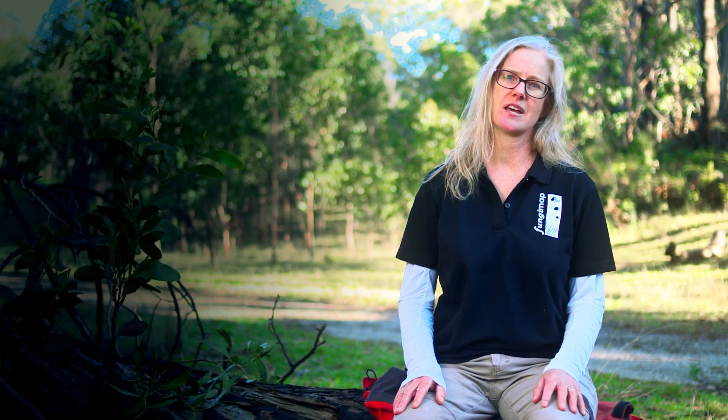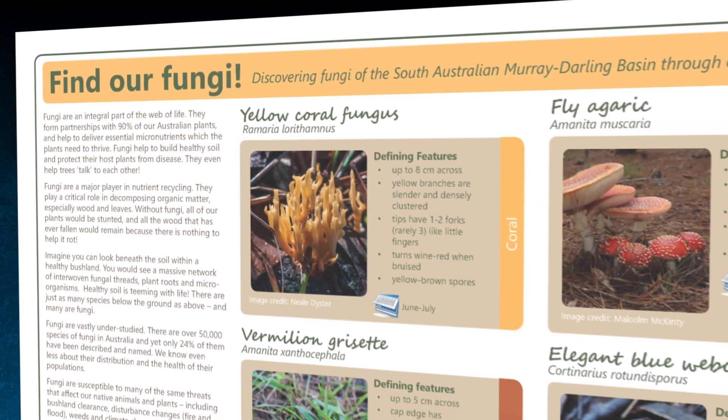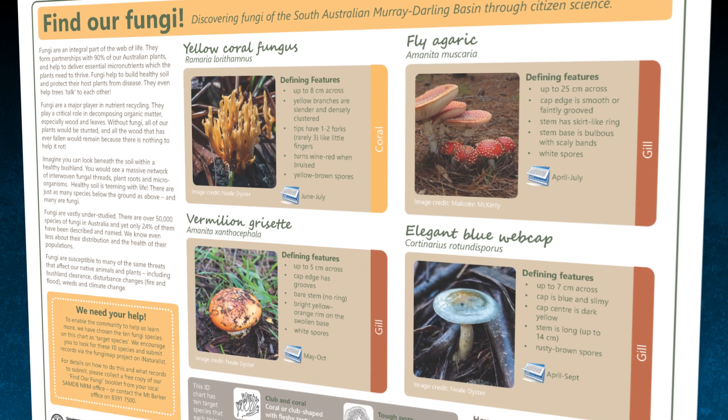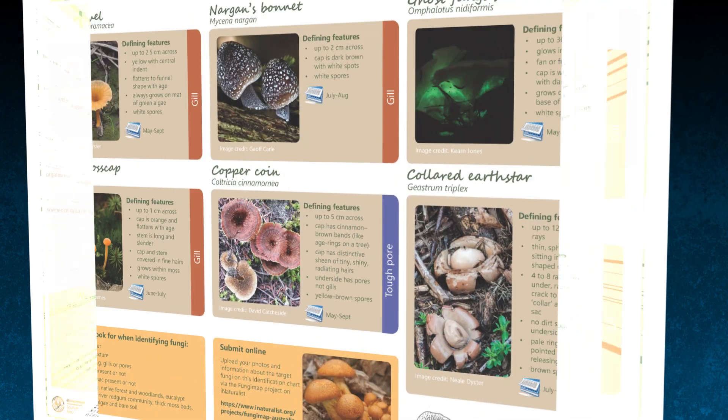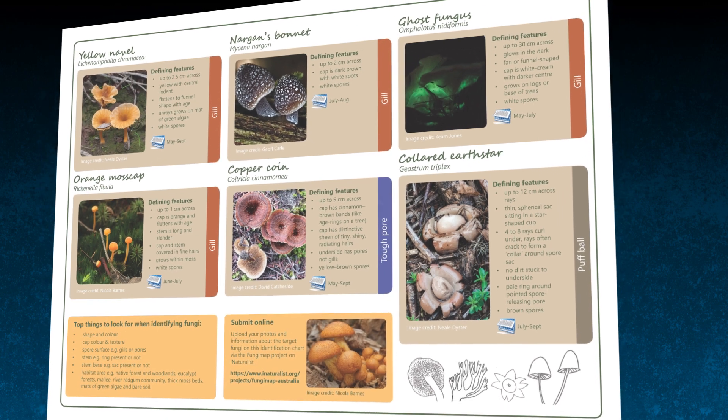We've chosen 10 of the most unique fungi in South Australia as target species for you to identify. These species were selected for two reasons. They're easy to identify because they have distinctive features that we can all see, and they can be found in several places in our region. Your observations can help scientists to learn more about the population trends and threats to our native fungi.